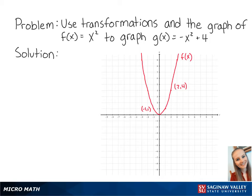For this problem, we want to use transformations in the graph of f of x equals x squared to graph g of x equals negative x squared plus 4. g of x is equal to negative f of x plus 4.